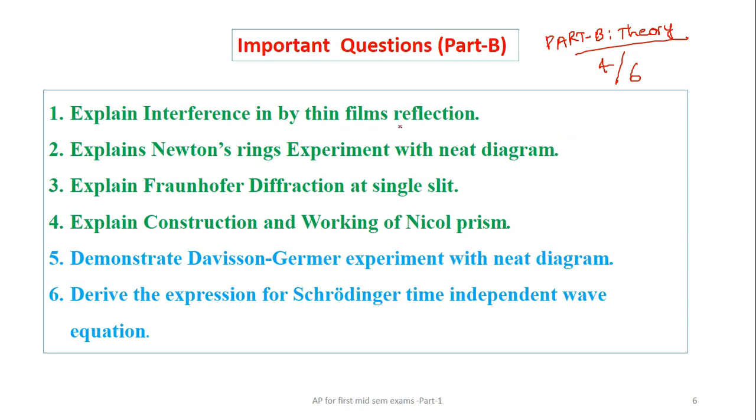When we come to the first unit, we have interference in thin films, then Newton's rings experiment with the neat diagram, Fraunhofer diffraction at single slit and construction and working of Nicol's prism. So generally from first two, one question will come, and generally from second two, one question will come, there may be sub questions also. So here, each question carries 5 marks, that point we have to remember.